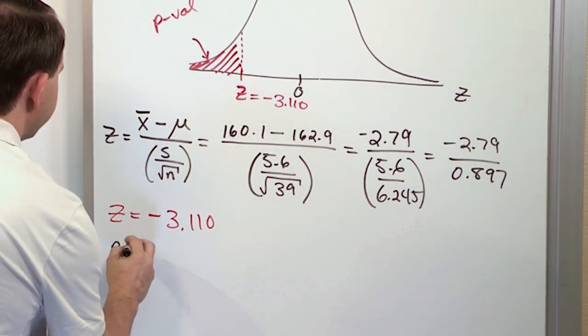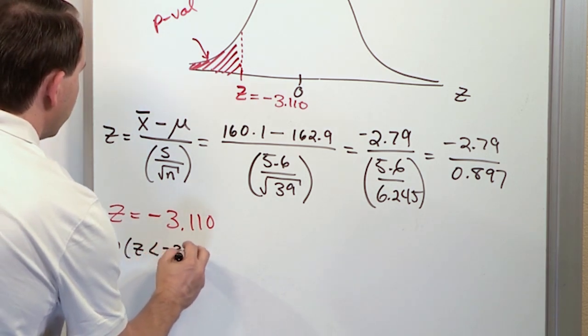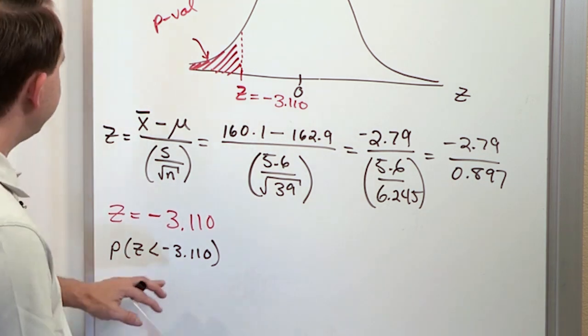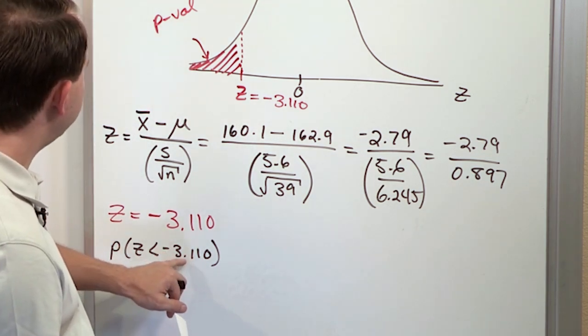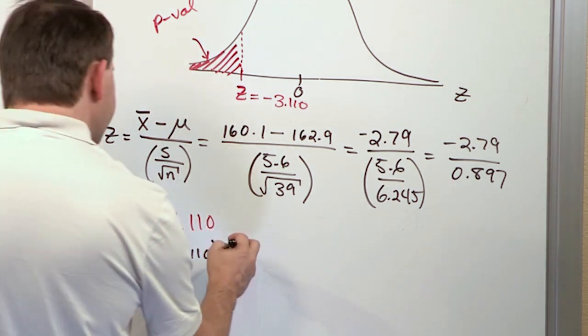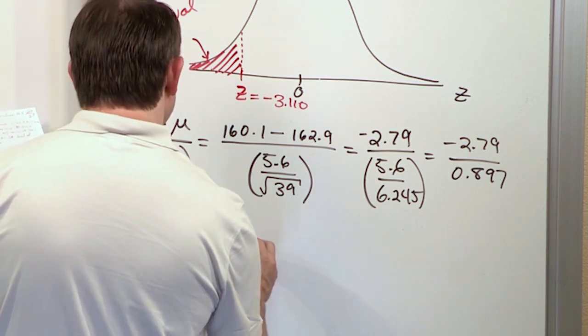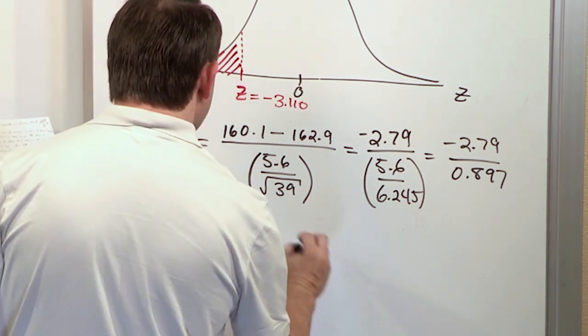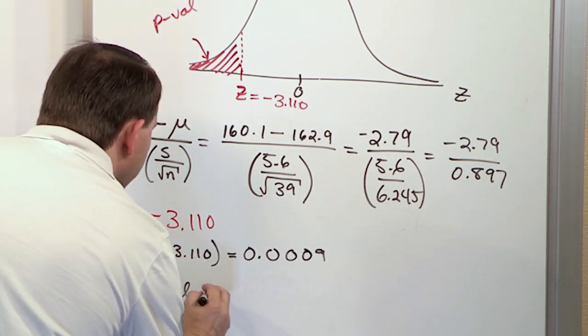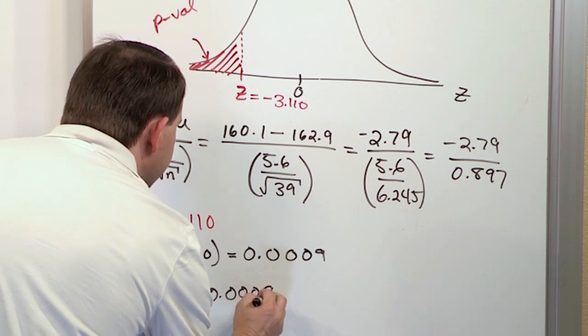So you get this straight from a normal distribution. The probability of getting z's less than negative 3.110. The chart always returns areas to the left. So we just look at negative 3.110 in a chart of z of the normal distribution. And you're going to get a really small number, 0.0009. So the p-value is 0.0009.